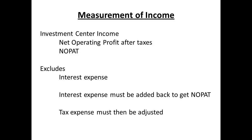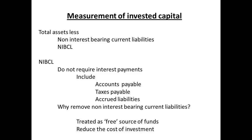What do we mean by income in this measurement? The income for an investment center is considered to be the net operating profit after taxes, sometimes referred to as NOPAT for convenience. This means that since income normally will exclude any interest expense, we must add that expense back and then adjust the tax expense accordingly. We also have to be clear about what we measure as invested capital. The measurement used is to take total assets and remove any non-interest bearing current liabilities, such as NIBCL. These include accounts payable, taxes payable, and accrued liabilities. They are removed because they are regarded as a free source of funding, and so reduce the real cost of investments.